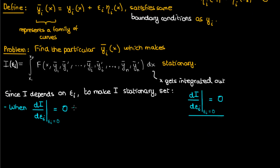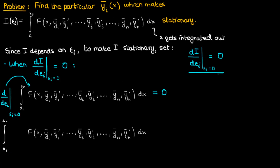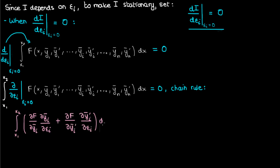When the derivative of capital I with respect to epsilon_i is zero, the derivative of this whole integral with respect to epsilon_i is also zero, since capital I equals this integral by definition. Moving the derivative inside gives us a partial derivative with respect to epsilon_i. yi bar and yi bar prime are the only variables inside capital F which actually depend on epsilon_i. The other y's without index i have their own variation, so applying the chain rule of partial differentiation gives the following expression.